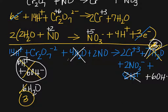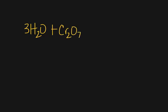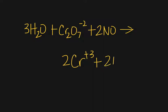Let's rewrite this nicely. The final balanced equation in basic solution is: 3 H₂O + Cr₂O₇²⁻ + 2 NO → 2 Cr³⁺ + 2 NO₃⁻ + 6 OH⁻. It's a lot of bookkeeping, but once you keep track of everything it's not that bad. It does take a lot of practice. If you have any questions, make sure you ask in class. See you later!